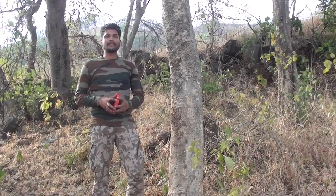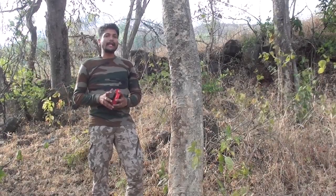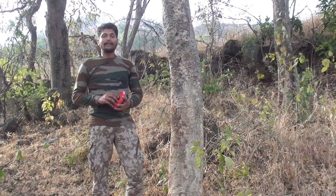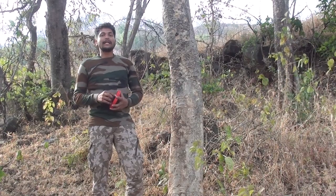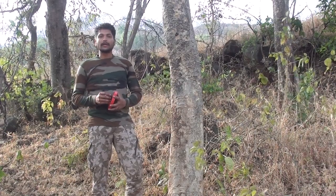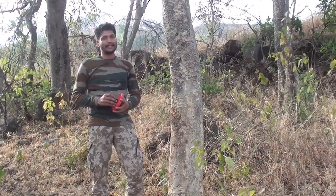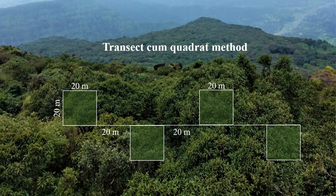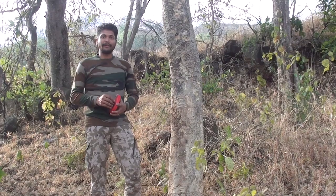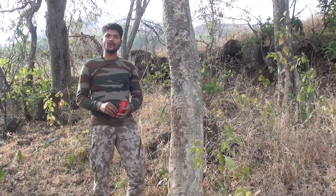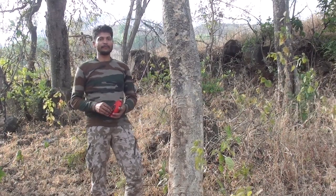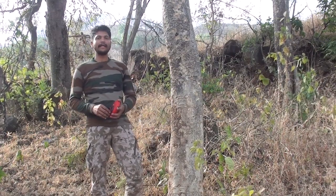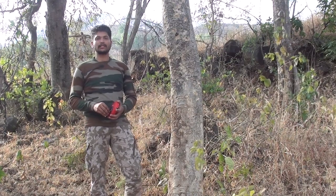To check tree diversity, we are using a transect-cum-quadrat method in forest fragments such as sacred groves, private areas, and protected areas. At each site, four quadrants of 20 by 20 meters are laid on one transect, keeping a 20-meter interval. In each quadrant, we record the name of species, abundance, and phenological status of those trees.